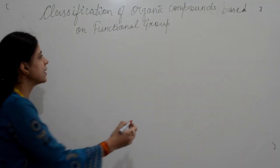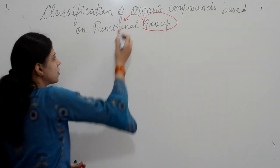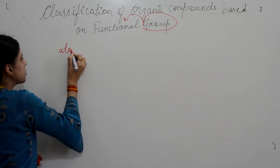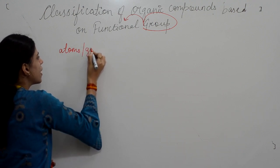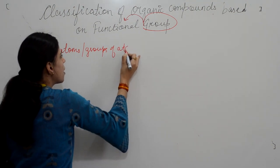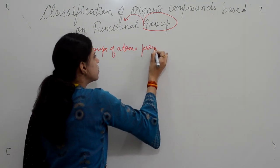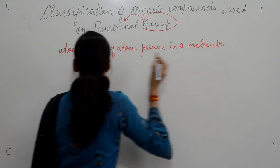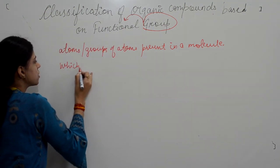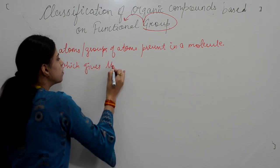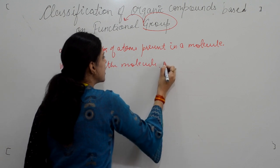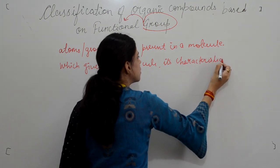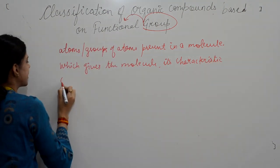So let us see what is a functional group. As the name suggests, it is a group which imparts some functions. Functional groups are the atoms or groups of atoms present in a molecule which give the molecule its characteristic chemical properties.